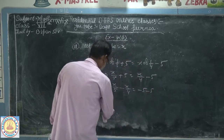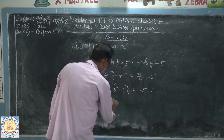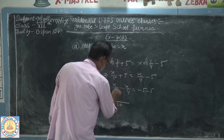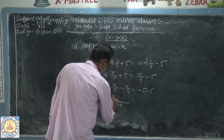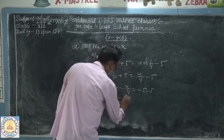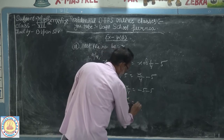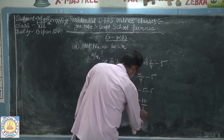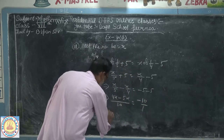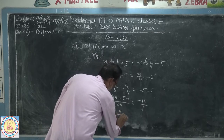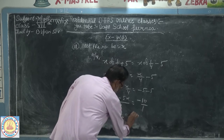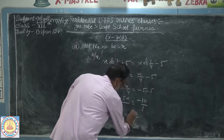LCM of 5 and 4 is 20. So: 4 times x minus 5 times x over 20 equals minus 10. That gives us 4x minus 5x over 20 equals minus 10, which simplifies to minus x by 20 equals minus 10 by 1.